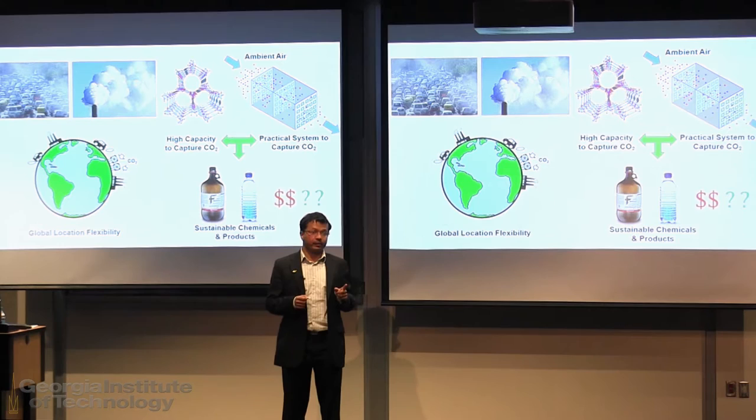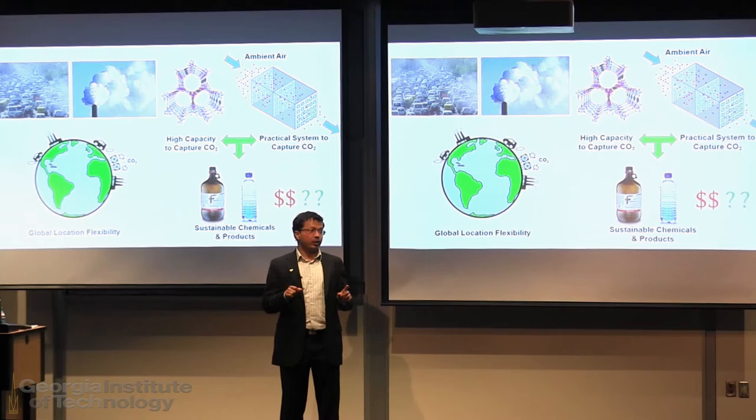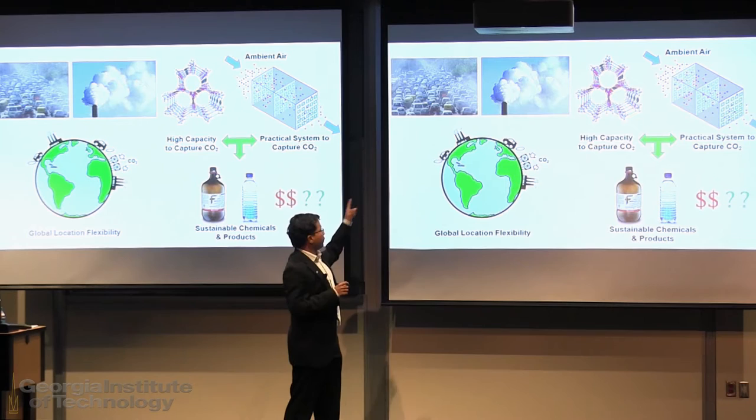Since the Industrial Revolution, CO2 concentration in air has increased by 50%. It has never been so high in the last 800,000 years, and that is being linked with global climate change. Just to give you an idea of the scale, we emit 4 million tons of CO2 every day.